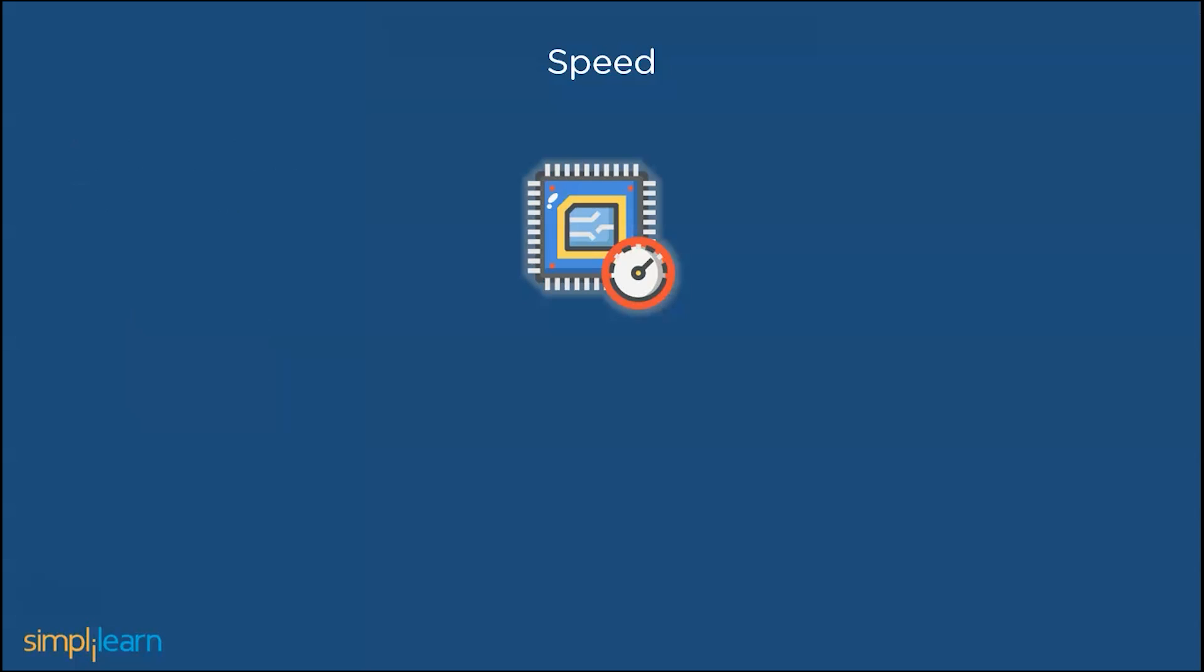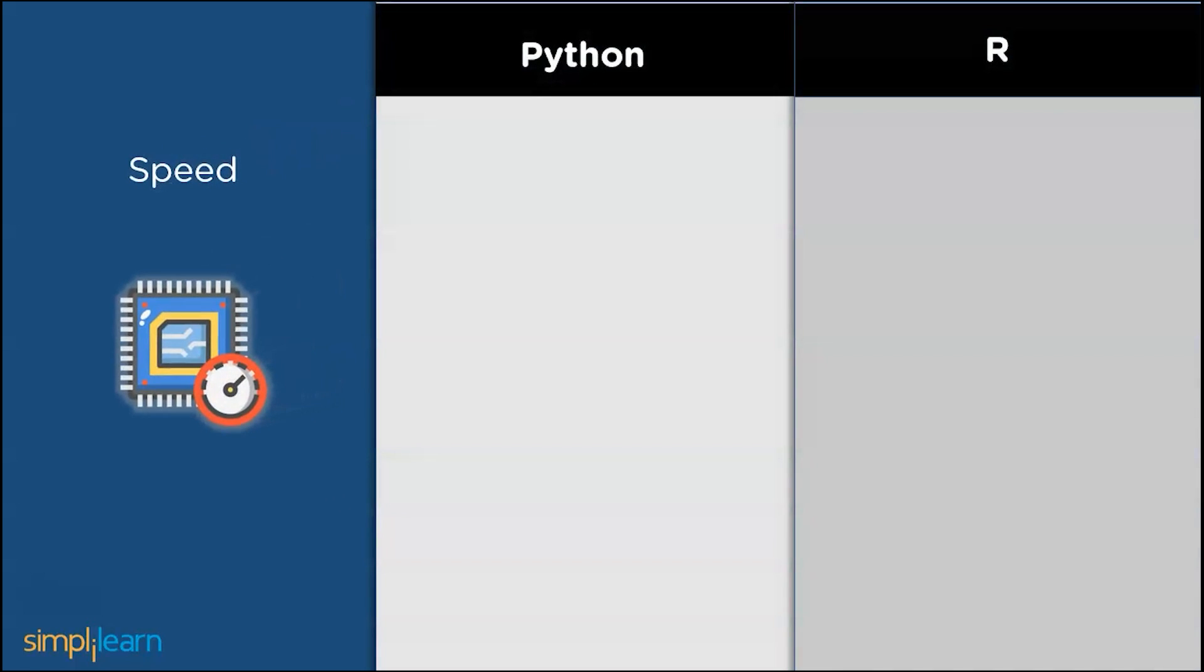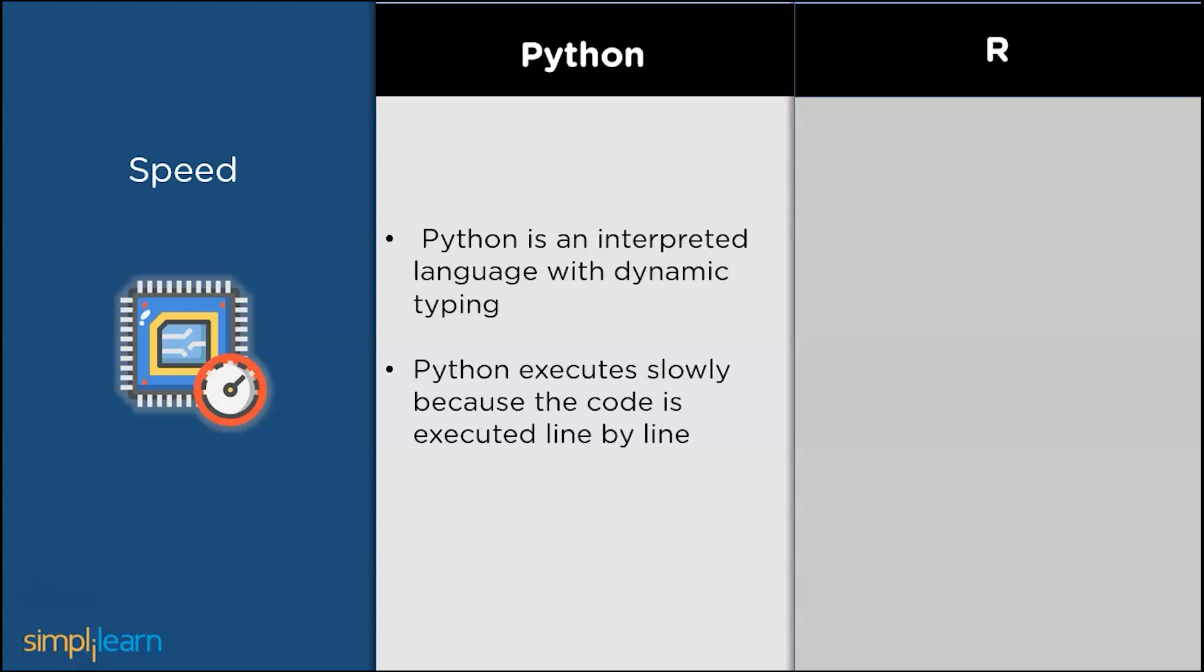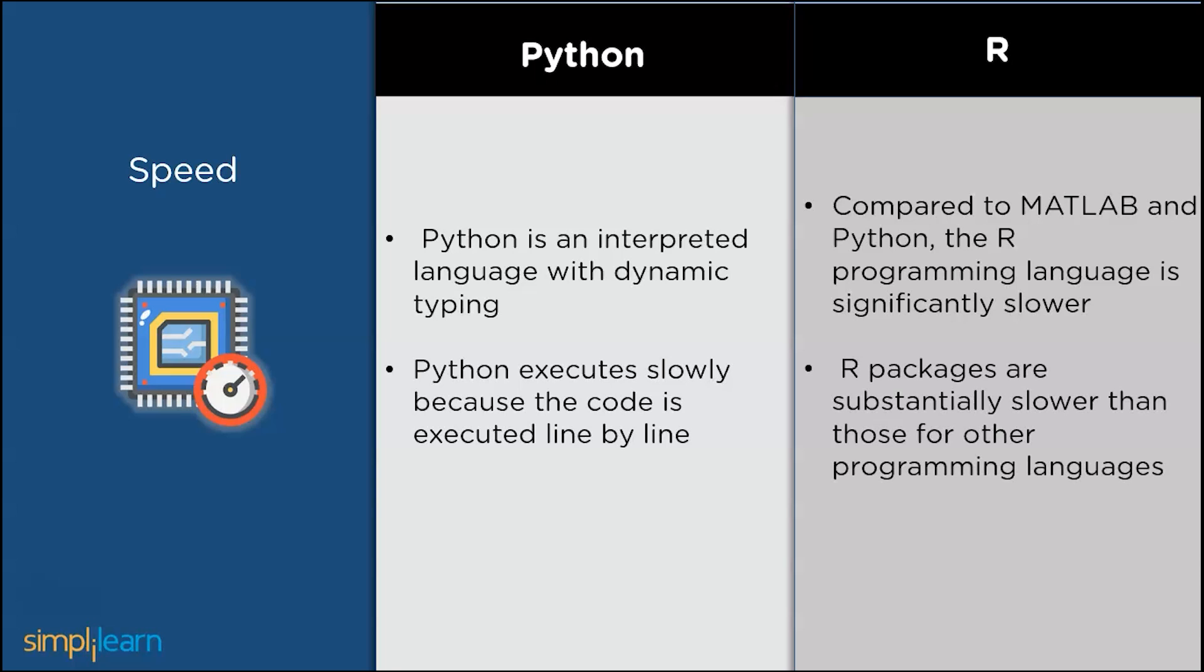The next parameter is speed. Python is an interpreted language with dynamic typing. Python always executes slowly because the code is executed line by line. So, compared to MATLAB and Python, R language is significantly slower. R packages are substantially slower than those for other languages. Now that we have covered speed,